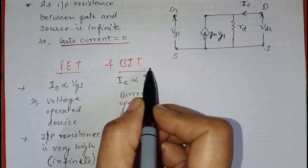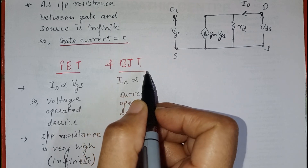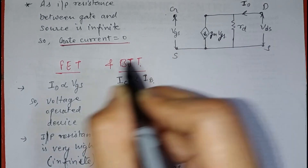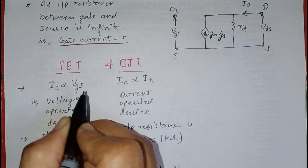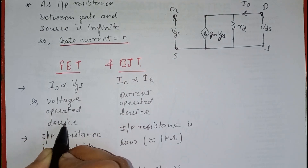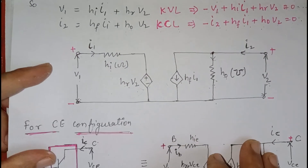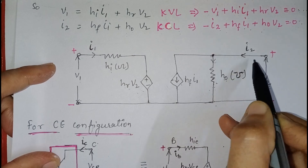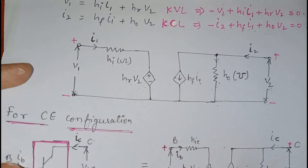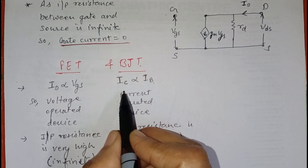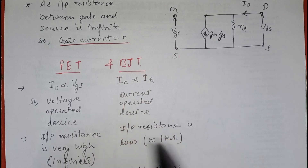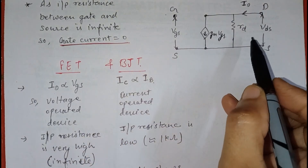Now we compare the FET model and the BJT small signal model. In the FET model, ID depends upon VGS, meaning the output current depends upon the input voltage or gate voltage — so it is a voltage-operated device. In the BJT model, the output current depends upon the base current, which is the input current — so BJT is a current-operated device.